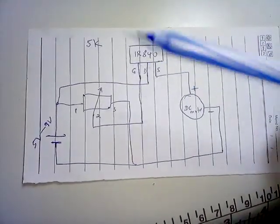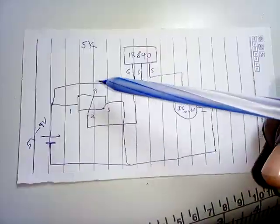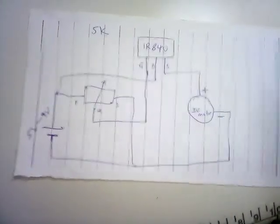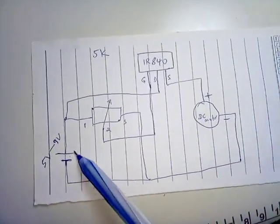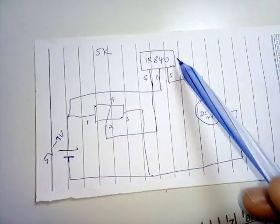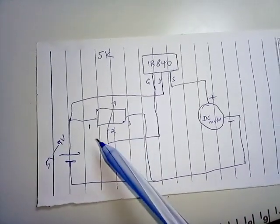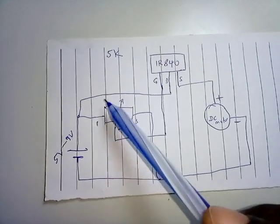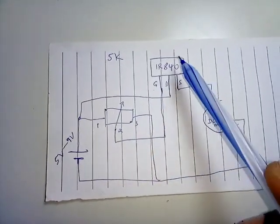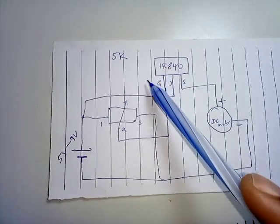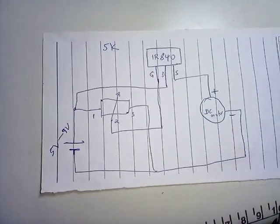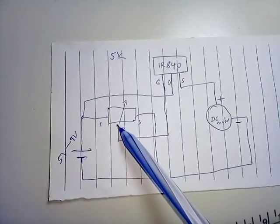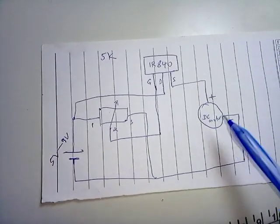Friends, today we are going to use a variable resistor to control the speed of a motor. This is the circuit diagram — this is the source providing power for the motor, this is the variable resistor, this is a power MOSFET, and this is the DC motor. By varying the value of the resistance, we are going to control the speed of this motor.